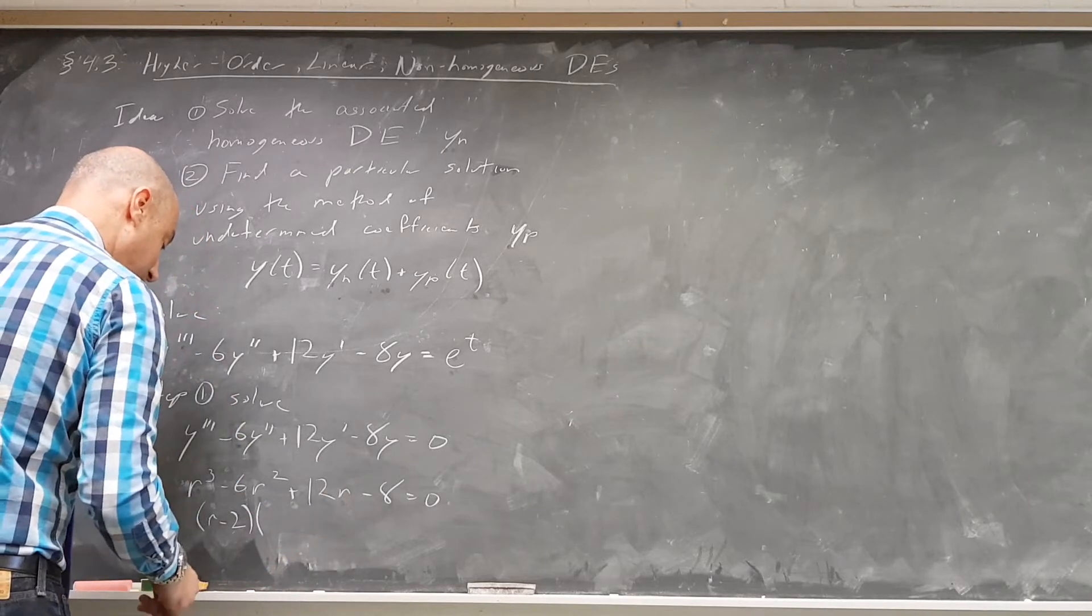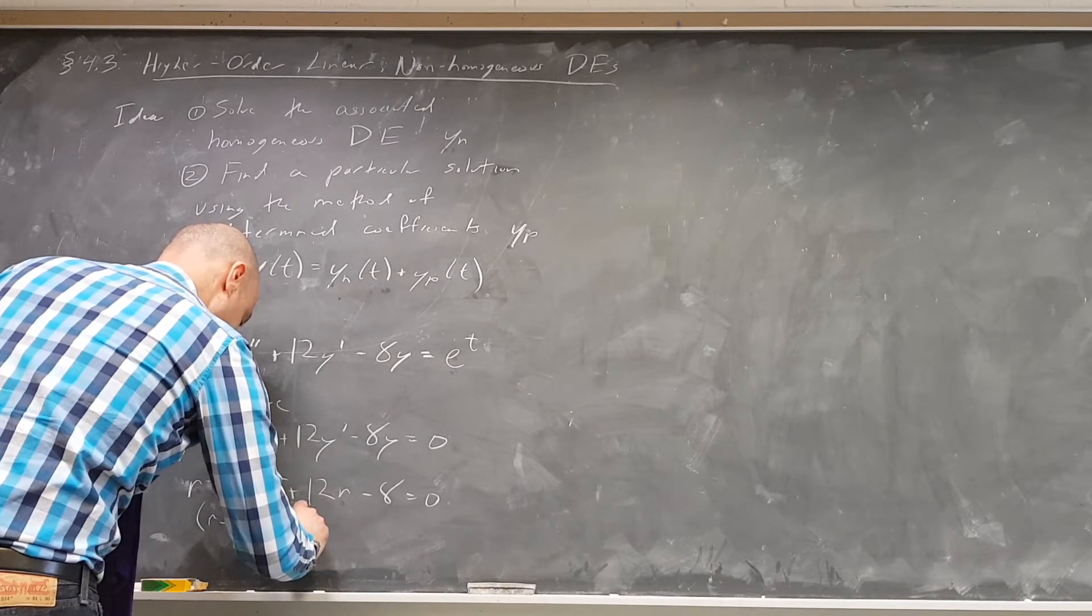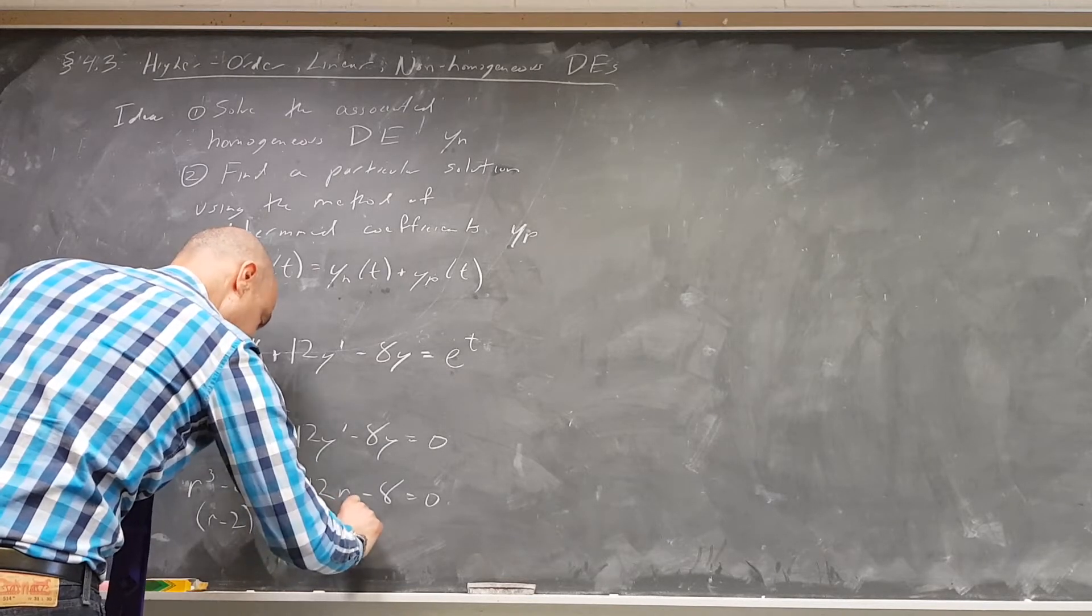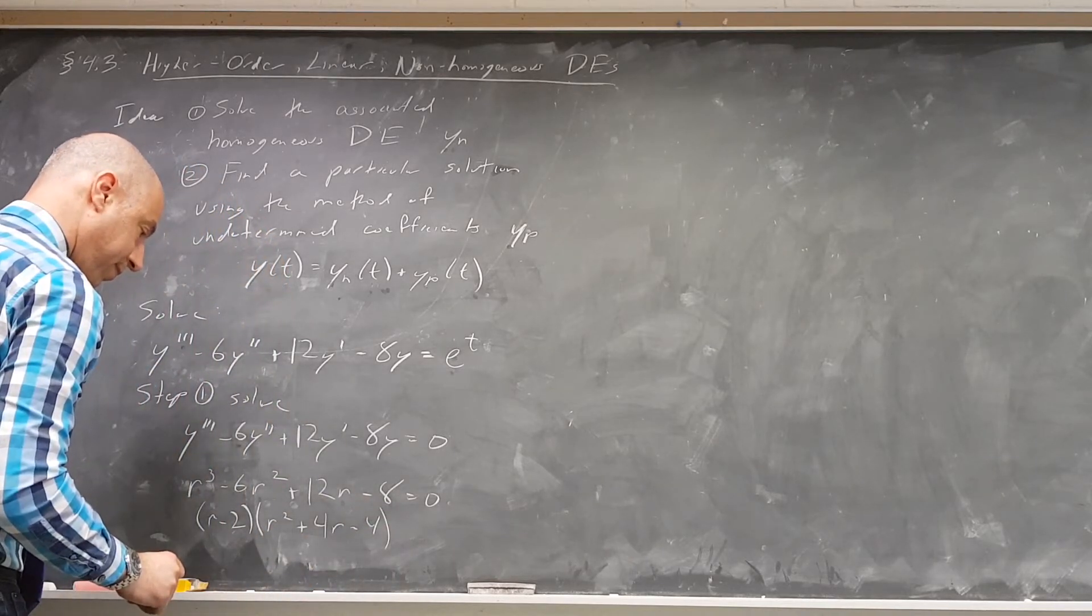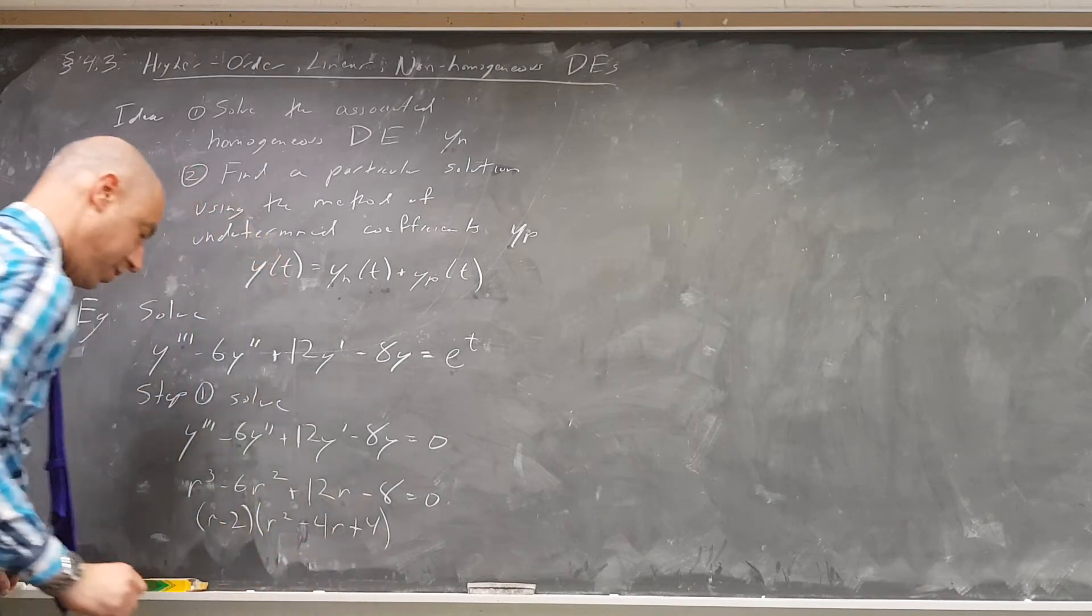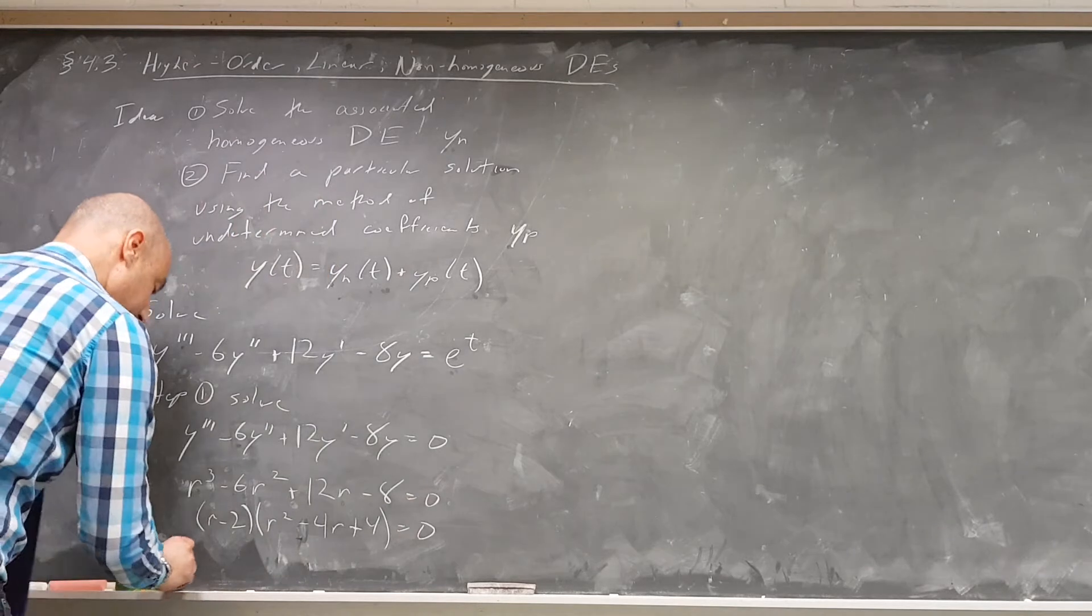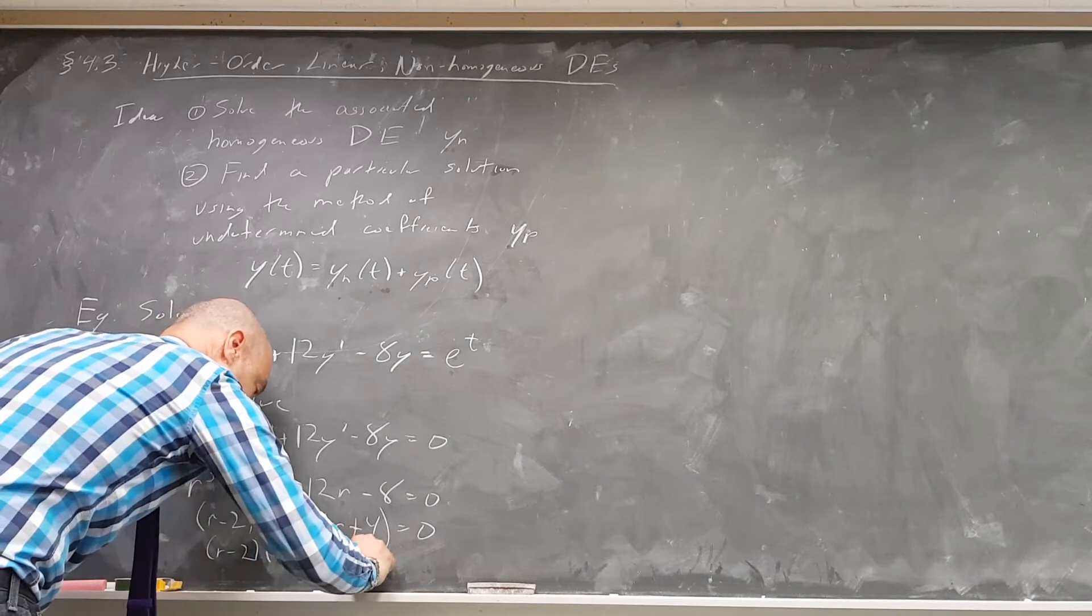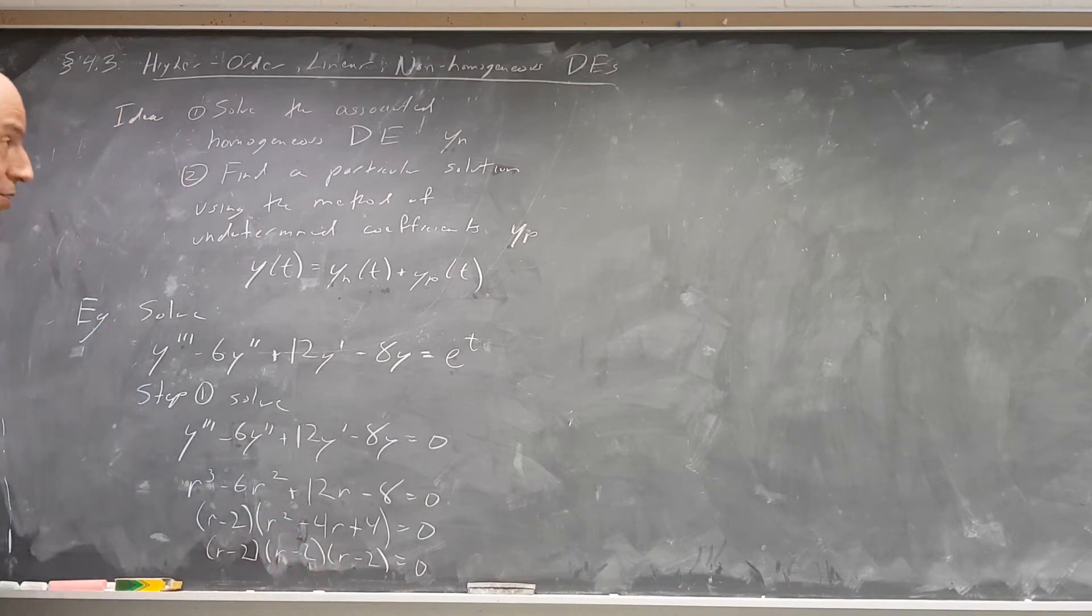And if you divide out, you will end up with r squared, let's see, plus 4r minus 4. Or, sorry, wrong way around, r squared minus 4r plus 4. And this, of course, is a perfect square also. So we can further factor that to r minus 2. And this factor is r minus 2, r minus 2. So this is just r minus 2 cubed.